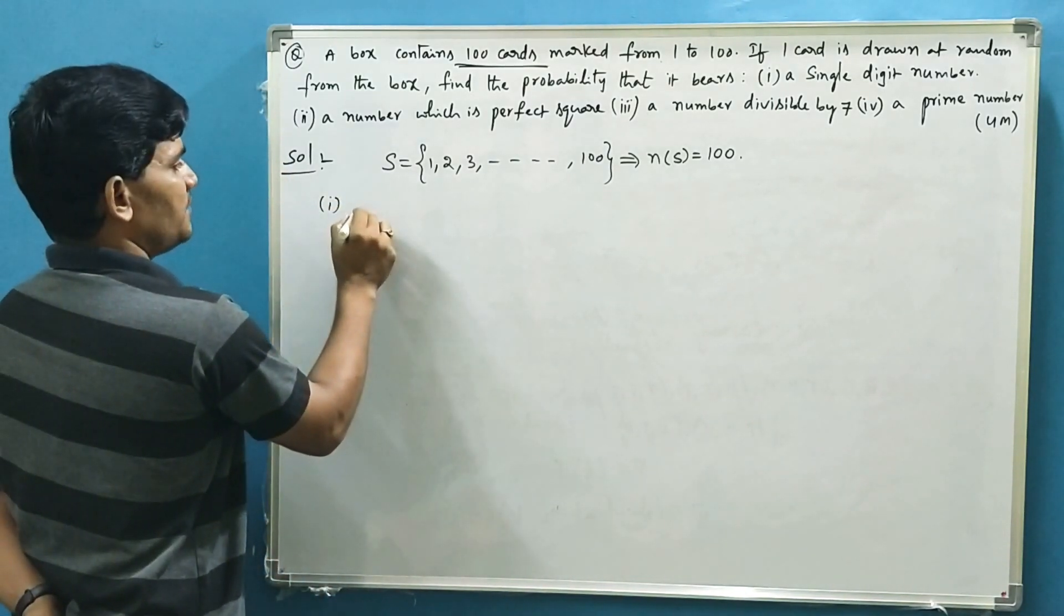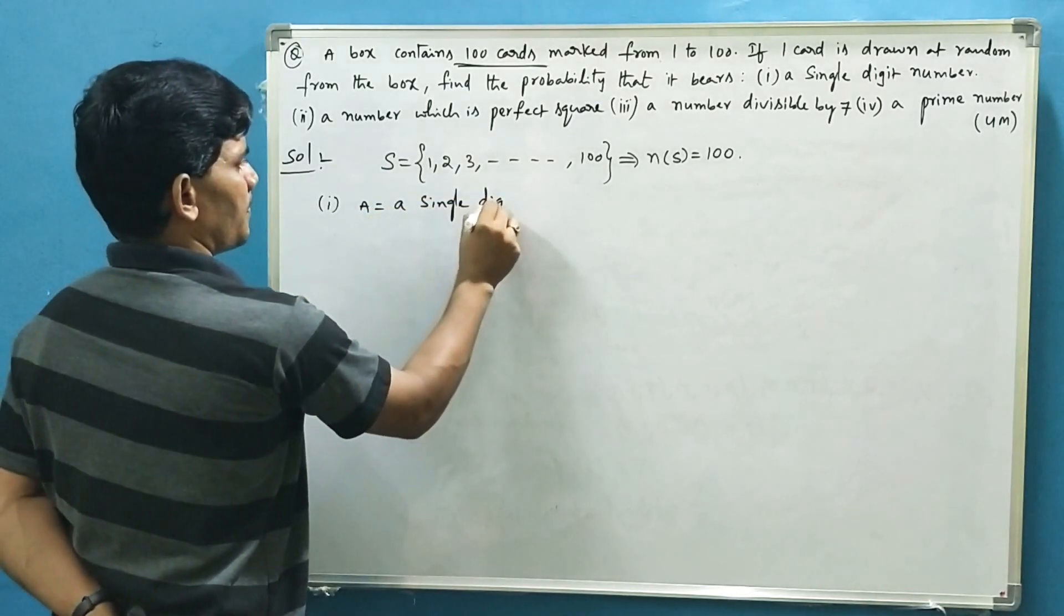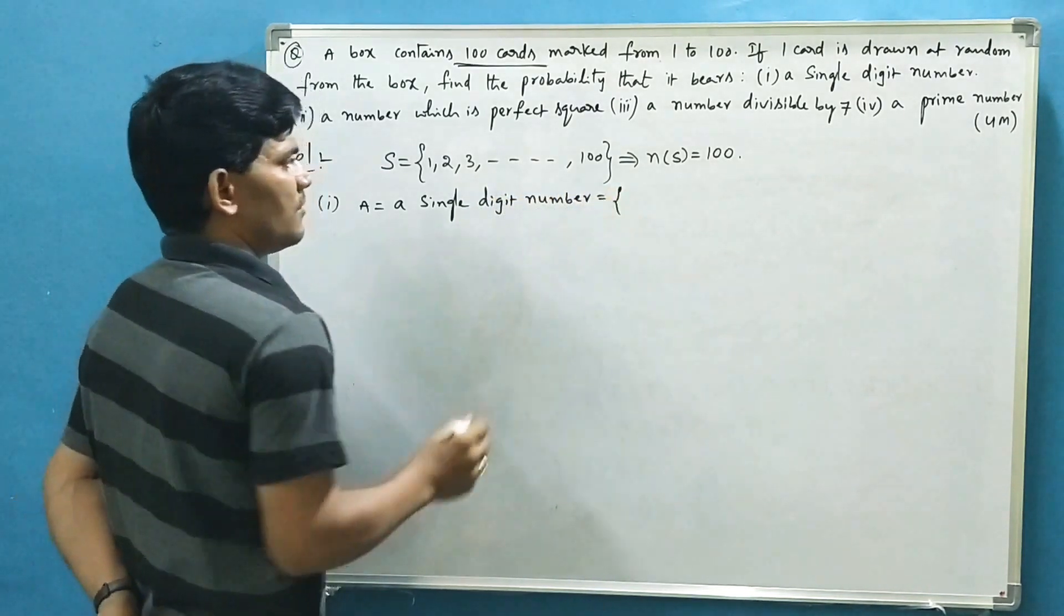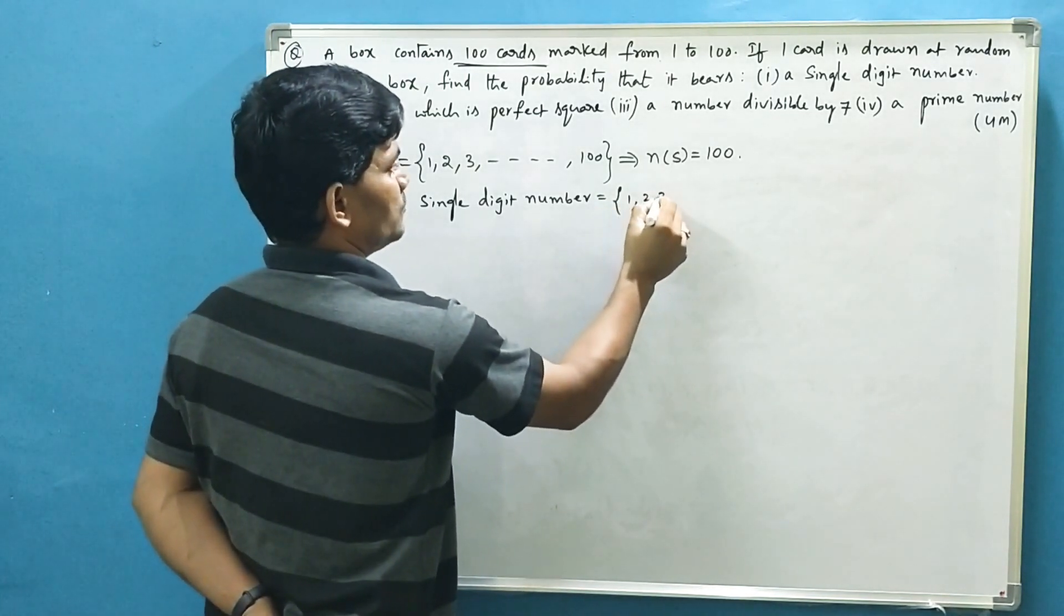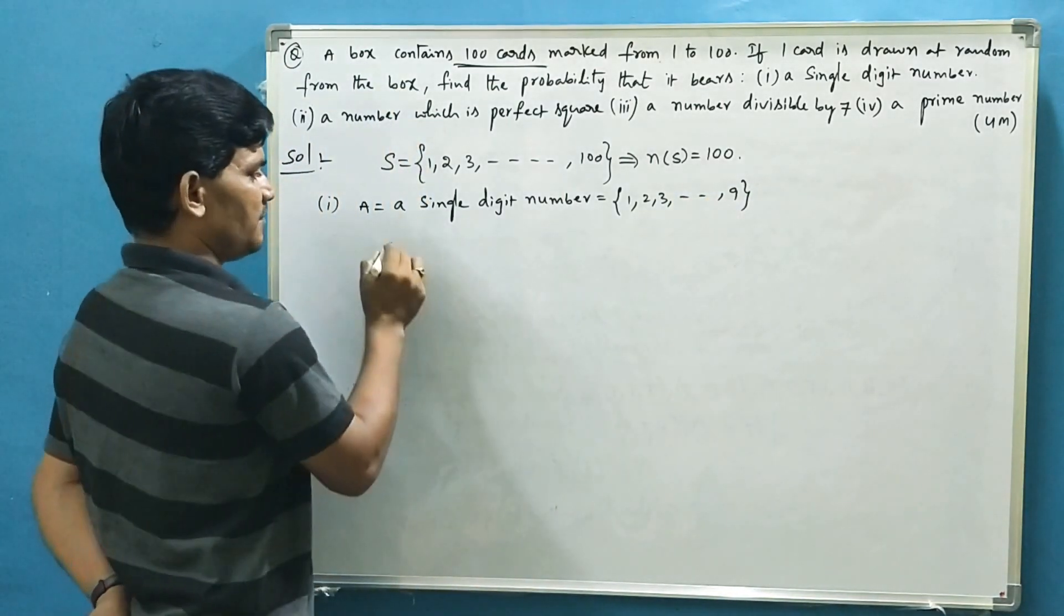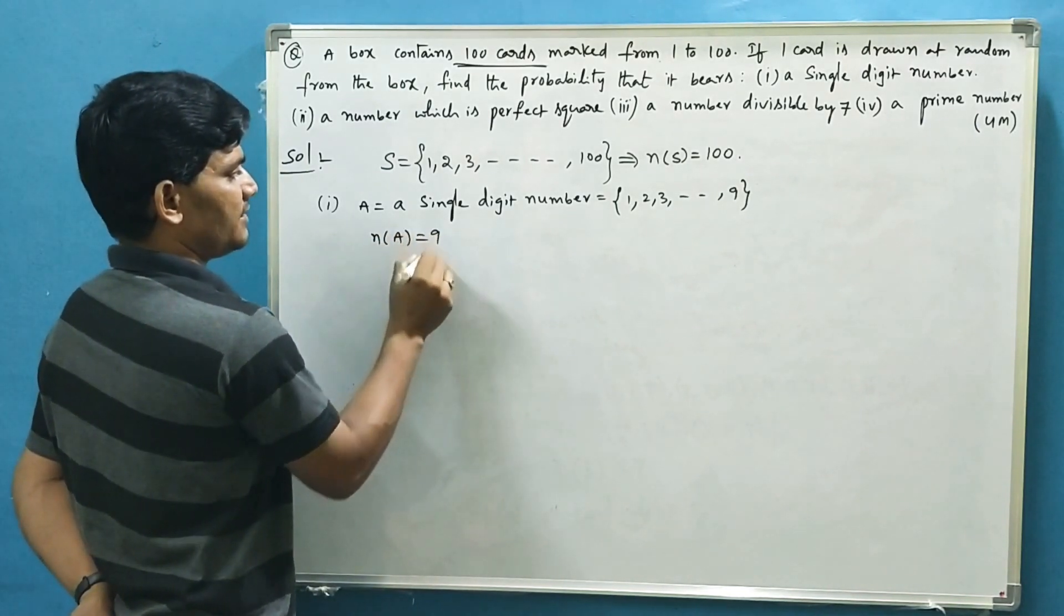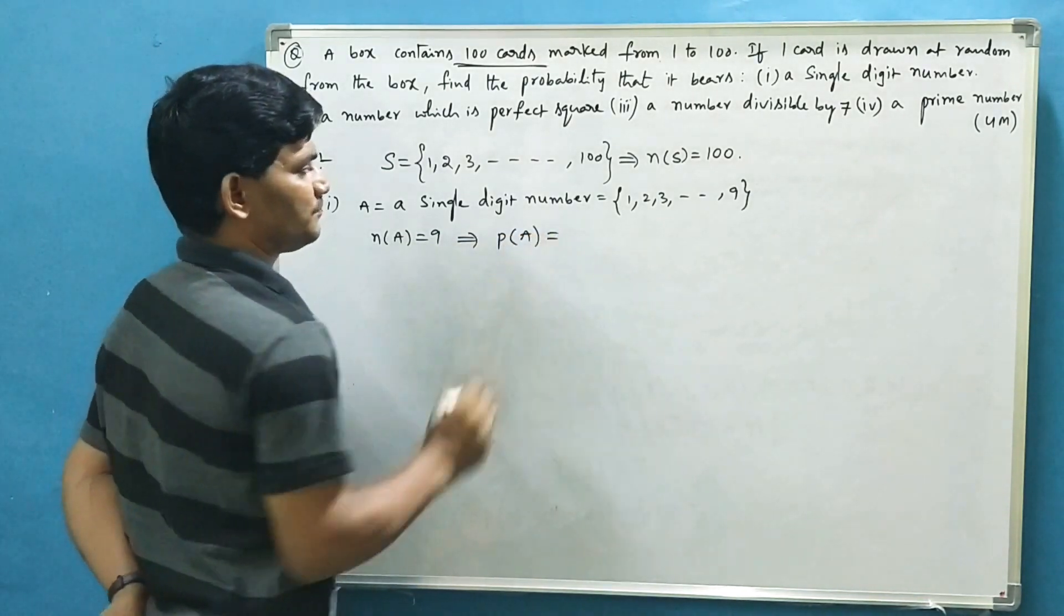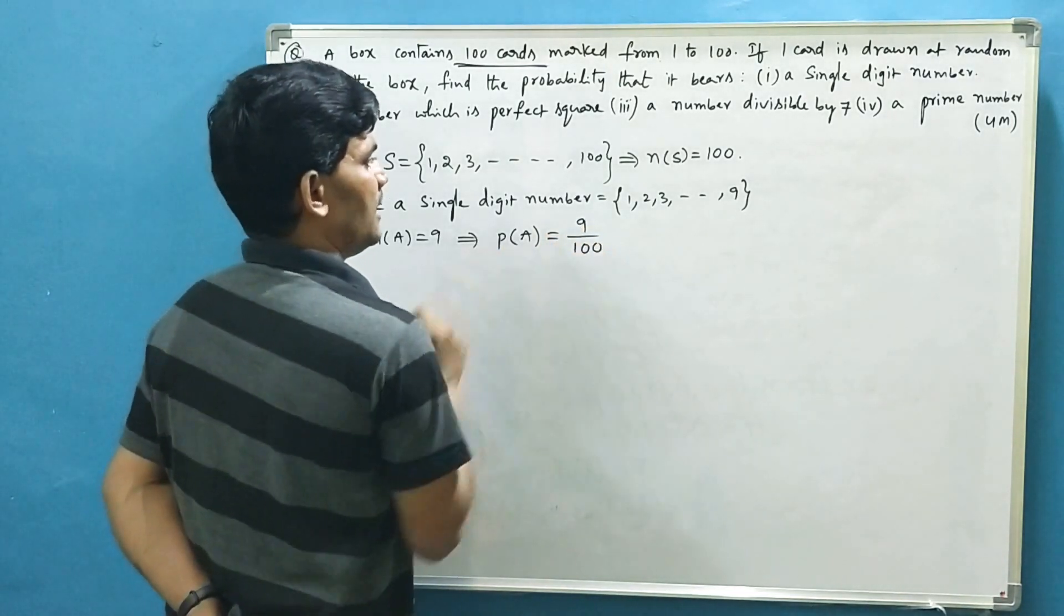First event, let it be A, a single digit number. As you know, first 9 numbers are single digit numbers. So 1, 2, 3, up to 9. 9 cards will have single digit numbers. So our favorable outcomes n(A) equals 9. The probability of getting a single digit number is 9 favorable outcomes out of 100.